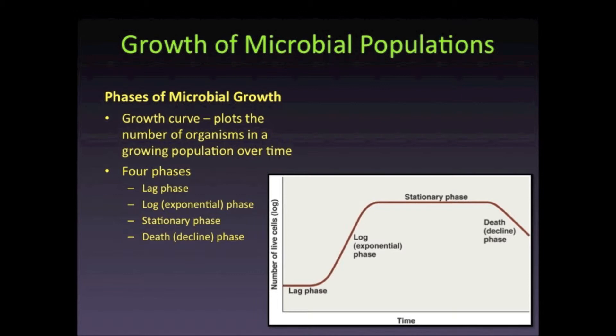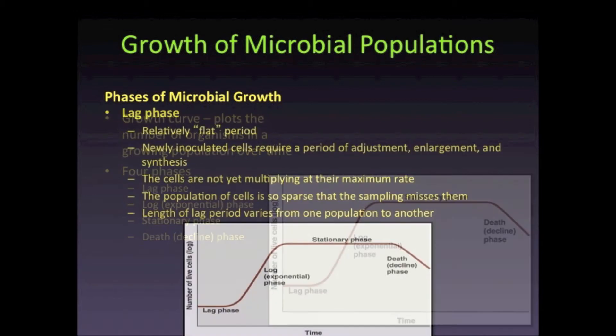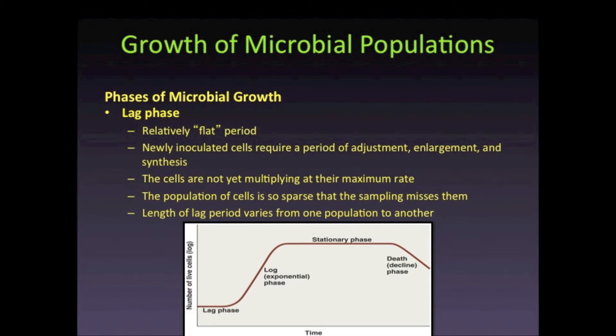The lag phase occurs when the bacterial cells are introduced to the fresh medium. Cells do not appear to be growing during this phase; however, the cells are still metabolically active. The length of the lag phase varies depending on the environmental conditions and between species. During the lag phase, the cells must adjust to their new environment. If the nutrients available are similar to their previous environment, the cells will adjust more quickly.